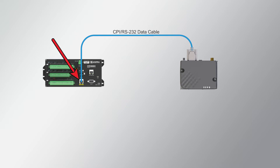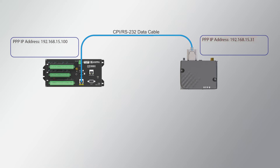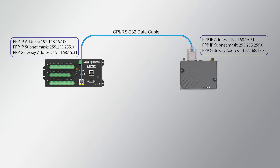In this example, a CR1000X data logger is connected to the RV50X using PPP. A CPI to RS-232 cable is attached from the CR1000X CPI port to the RV50X RS-232 serial port. The CR1000X is automatically assigned an IP address of 192.168.15.100 by the RV50X's DHCP server, while the RV50X has a static IP address of 192.168.15.31. Both devices receive a subnet mask of 255.255.255.0, and the CR1000X is assigned a gateway address of 192.168.15.31 — the IP address of the RV50X — as the modem will communicate with hosts outside the local network.